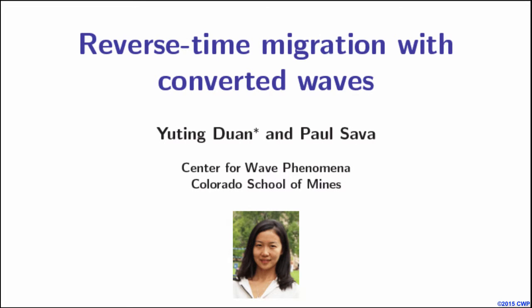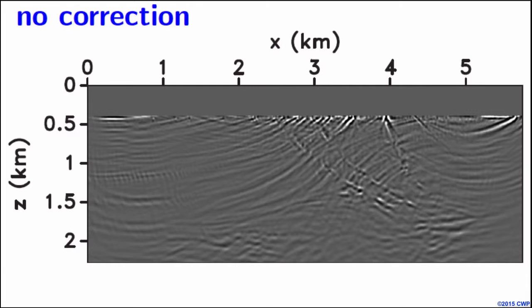Polarity reversal happens in the converted wave images, and this will cause destructive interference when we stack the images over experiments. Here is an example: this is a stacked PS image computed using the true Marmousi velocity models. We see that most of the reflectors are not well imaged, caused by the polarity change in individual PS images from every experiment.